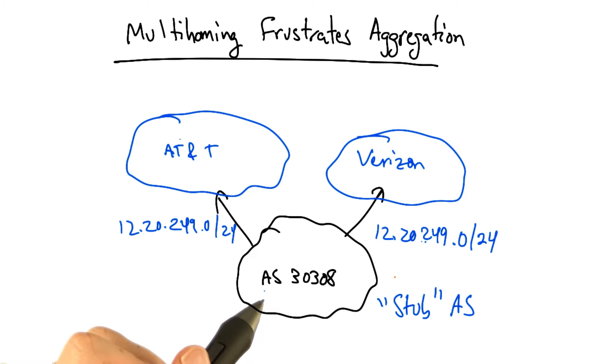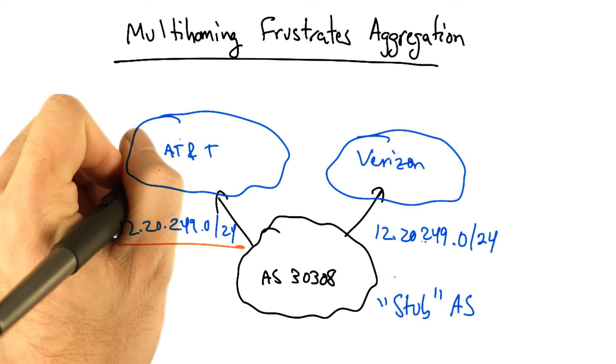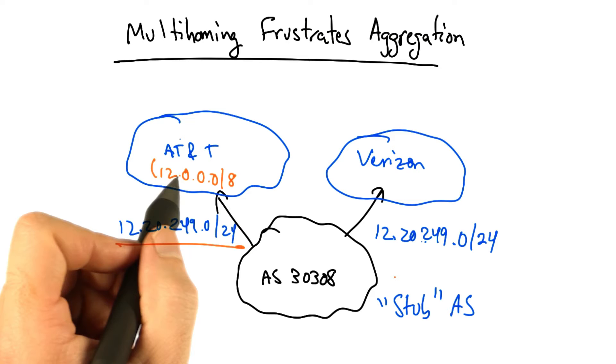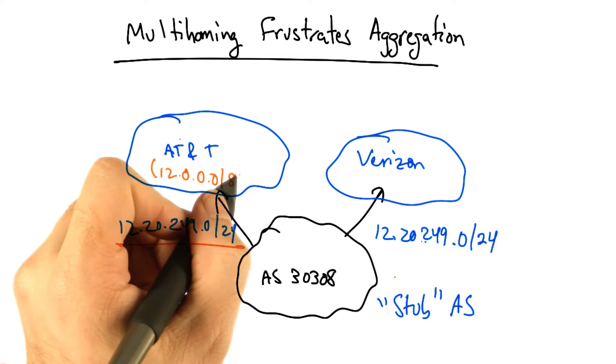In this example, a stub AS, in this case 30308, might receive IP address space, say 12.20.249.0/24, from one of its providers, such as AT&T, which happens to own 12.0.0.0/8.